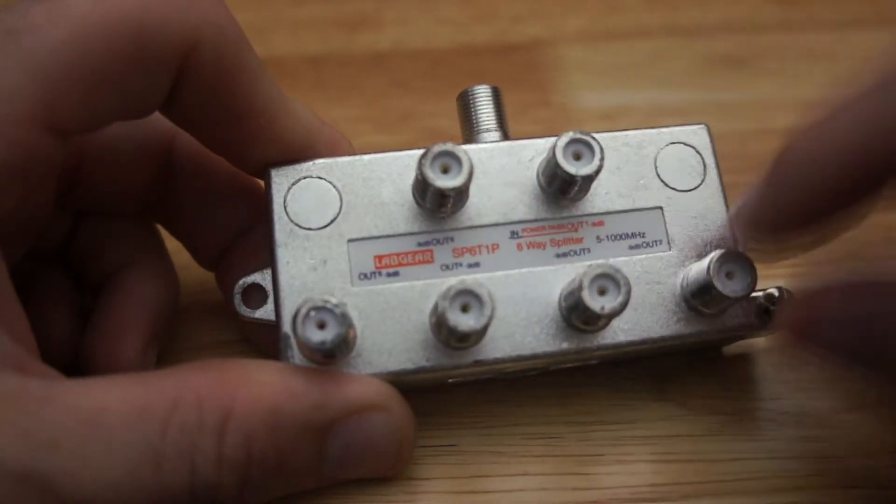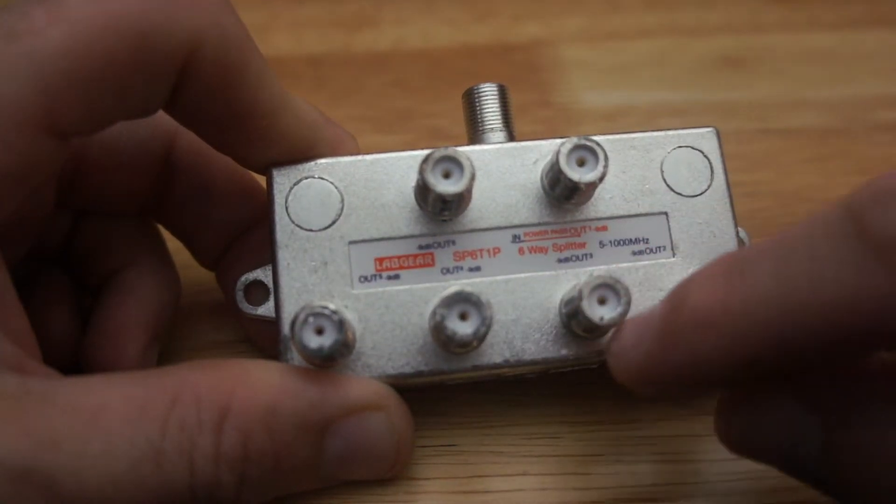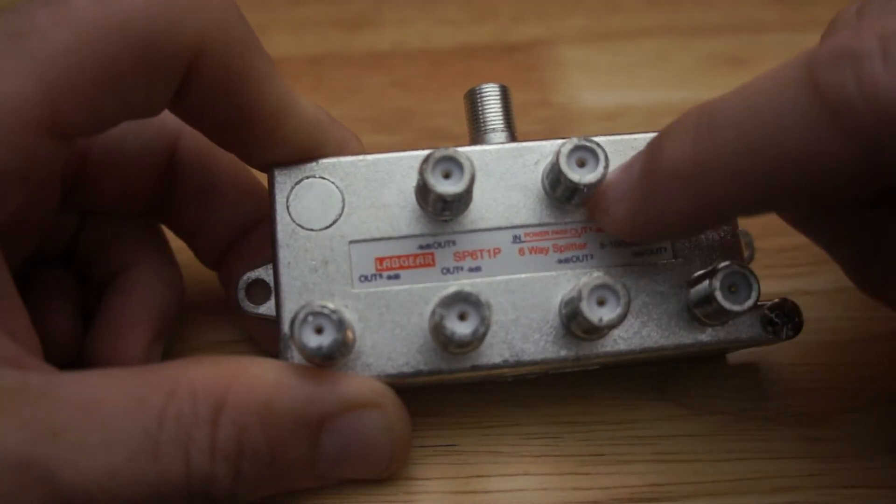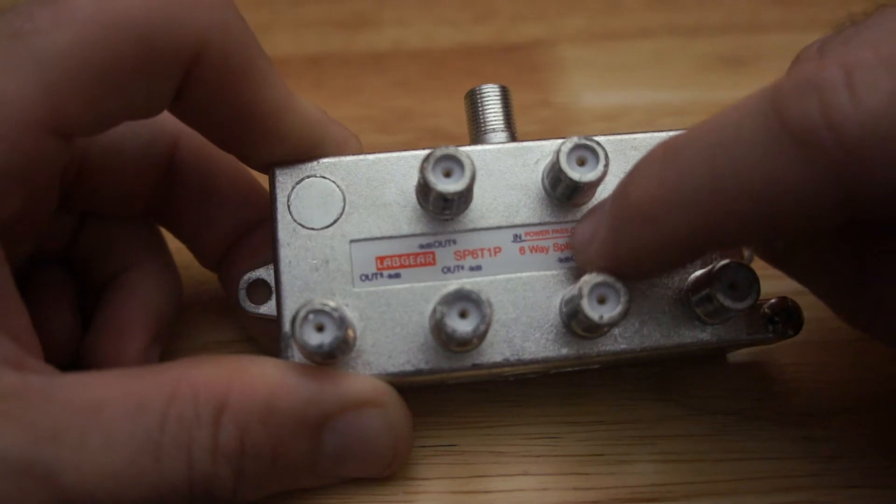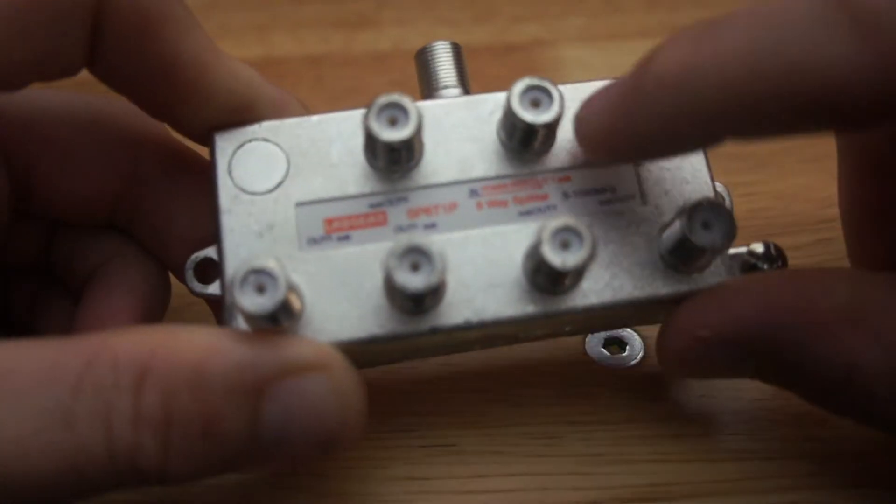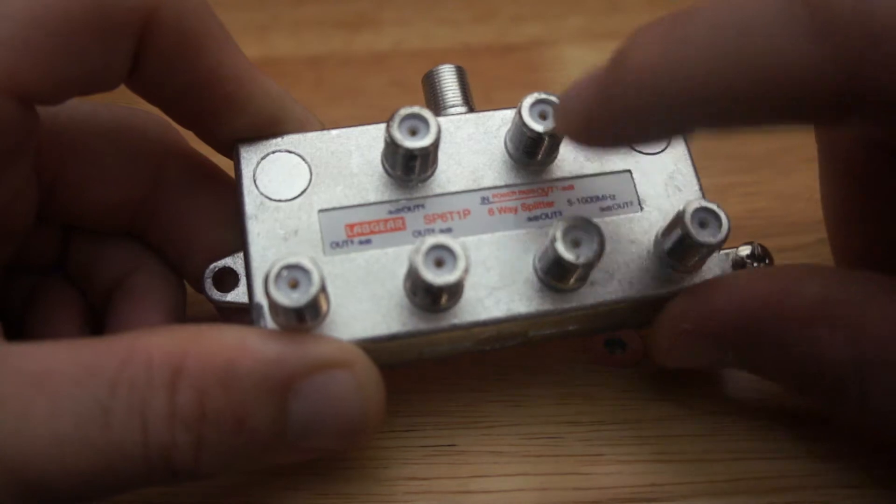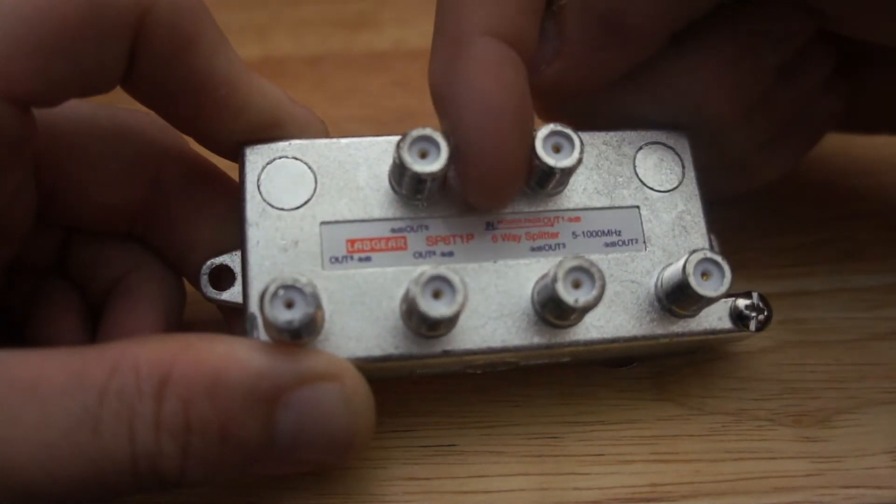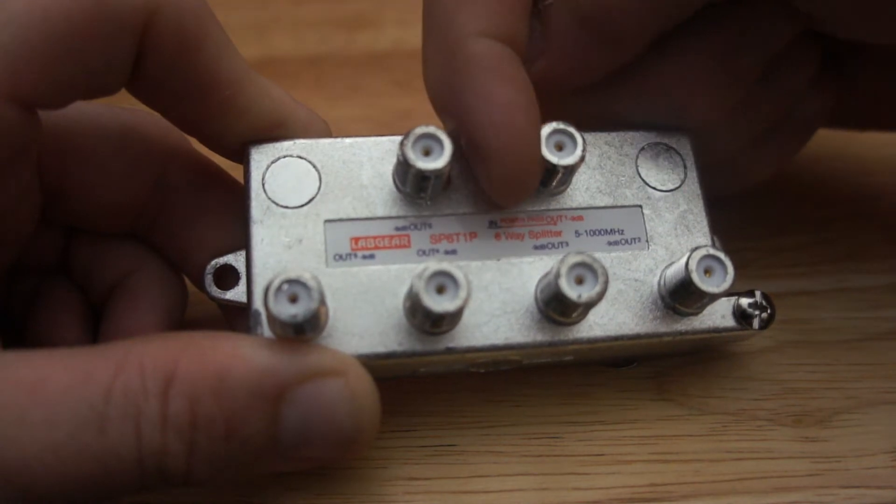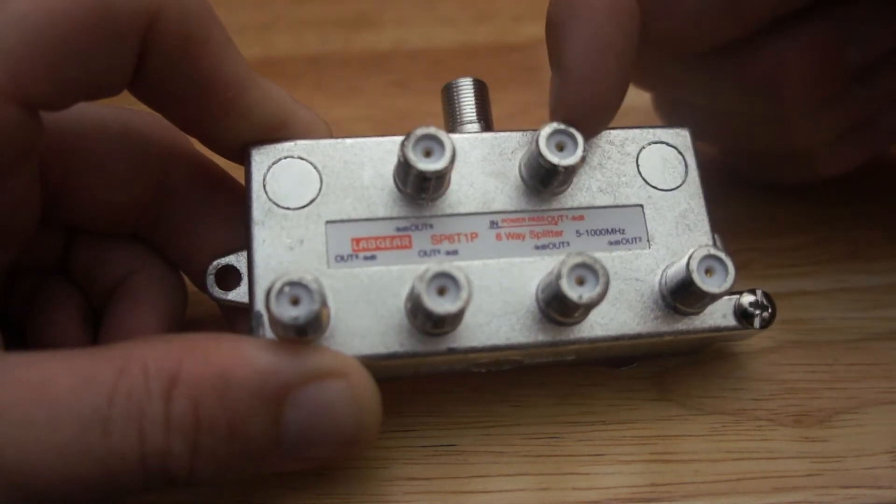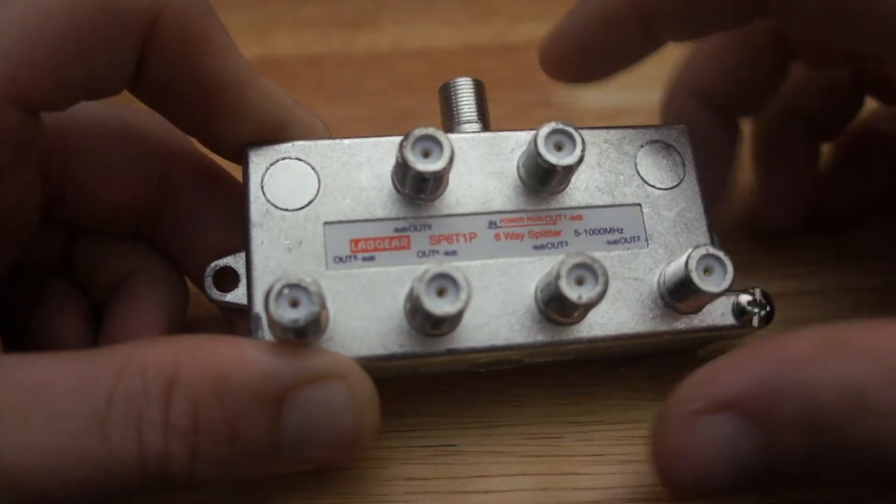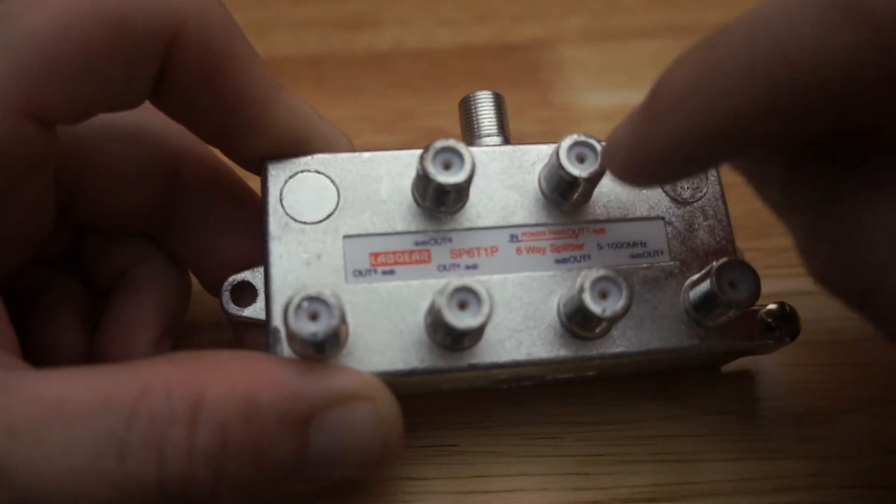You've got six outputs. One output on any splitter will have what's called a power pass. It might be very hard to read that, but this one here, it has a little red line going across from the input. It says in, and it says power pass, and it's pointing to this output.